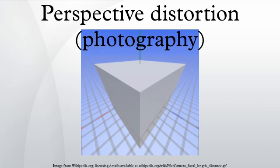Perspective distortion is determined by the relative distances at which the image is captured and viewed, and is due to the angle of view of the image being either wider or narrower than the angle of view at which the image is viewed, hence the apparent relative distance differing from what is expected.